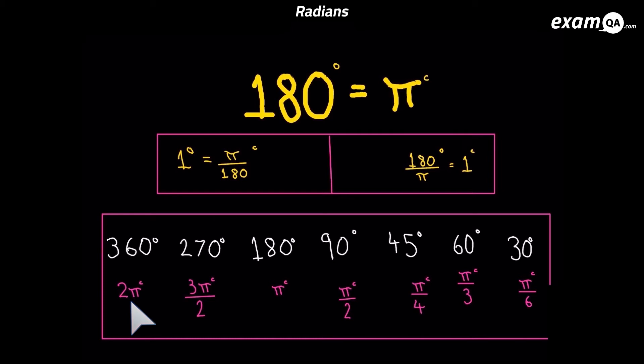Okay, so some of the key ones here is 360 degrees is 2π radians, 180 degrees is π radians. And also it's good to know what 90 degrees, 60 degrees and 30 degrees is. The other two are not as popular, but just go ahead and memorize all of them.